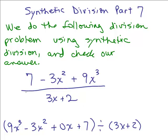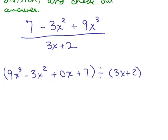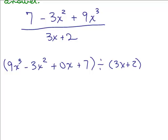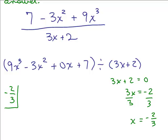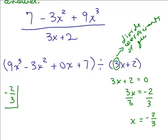We take what we're dividing by, set it equal to 0, and that gives us the number we put in the little box. But remember: this is 3x plus 2, not just x plus 2. So at the end, we have to divide the coefficients of the quotient by 3. We need to remember to divide the coefficients of the quotient by 3 before writing the final answer.